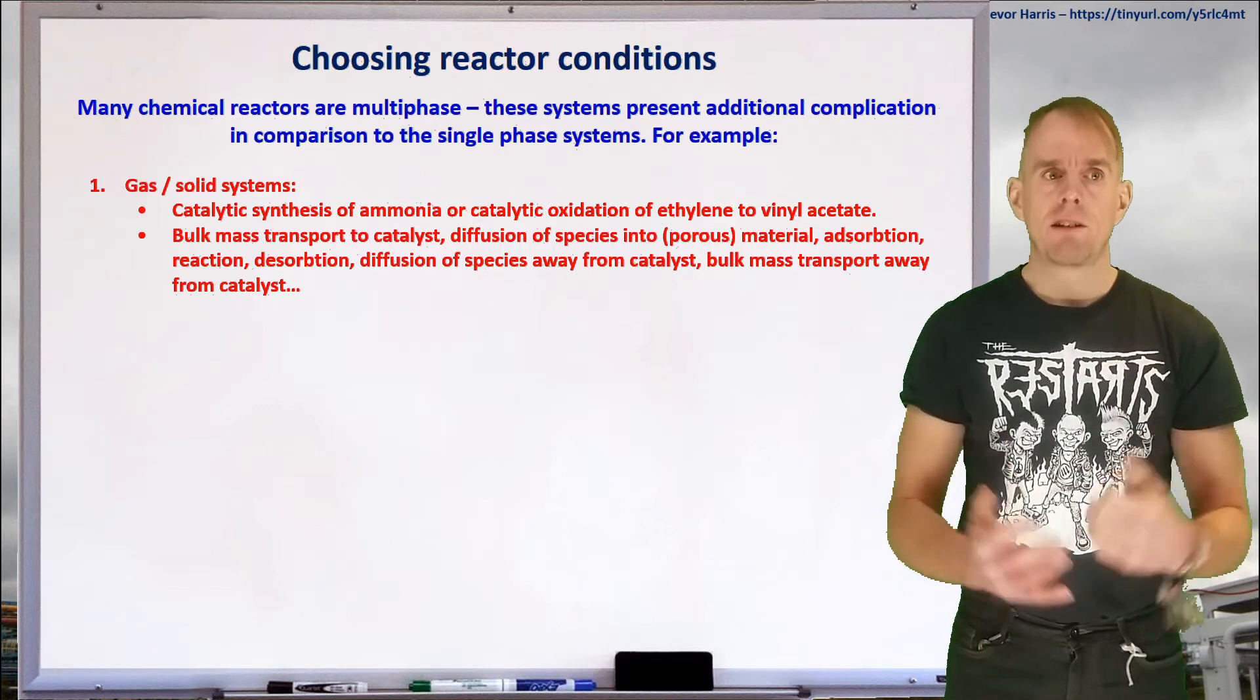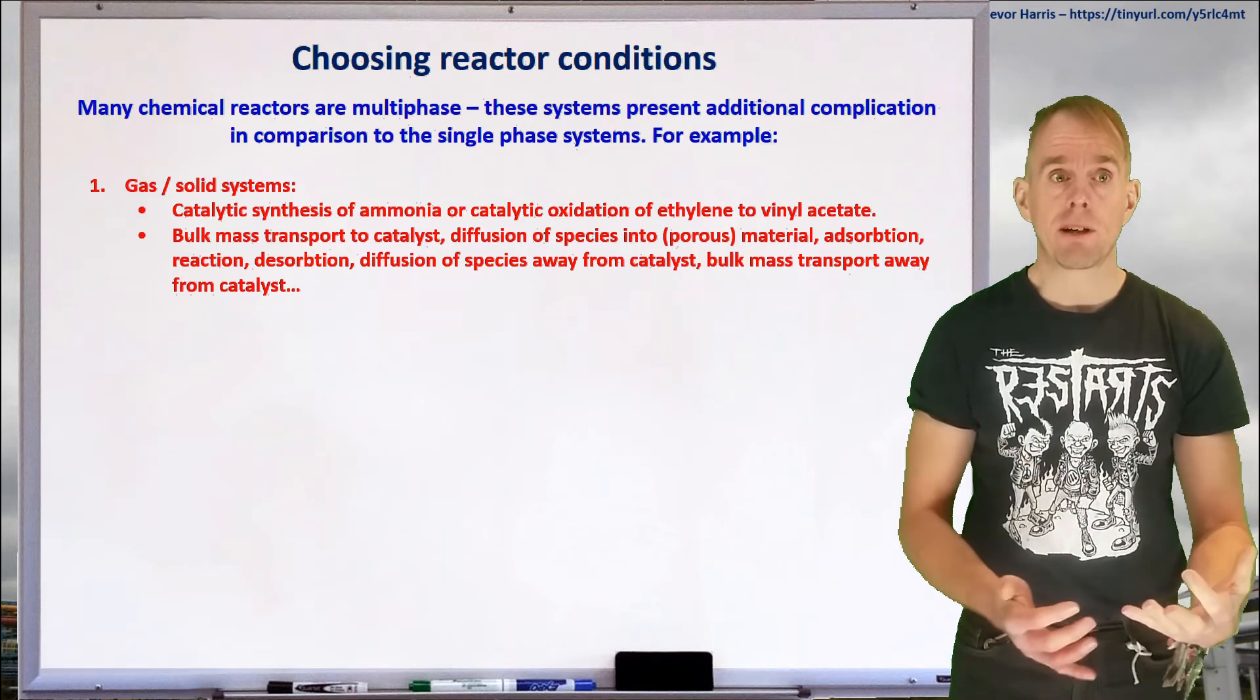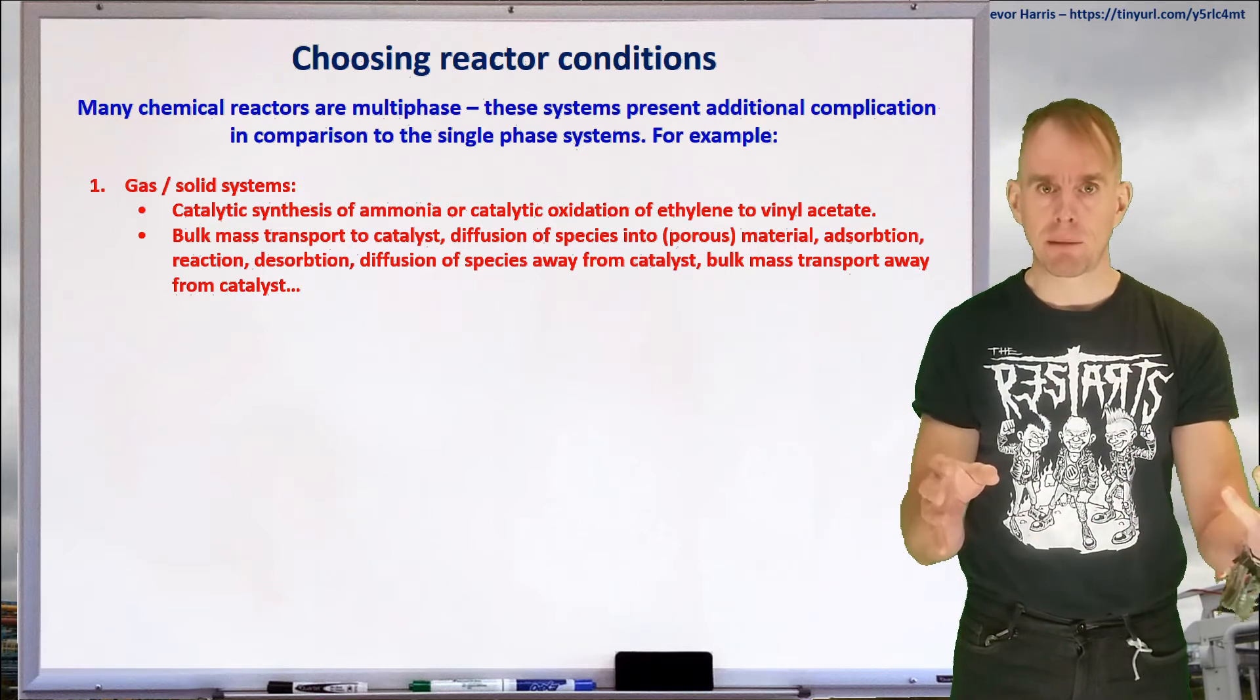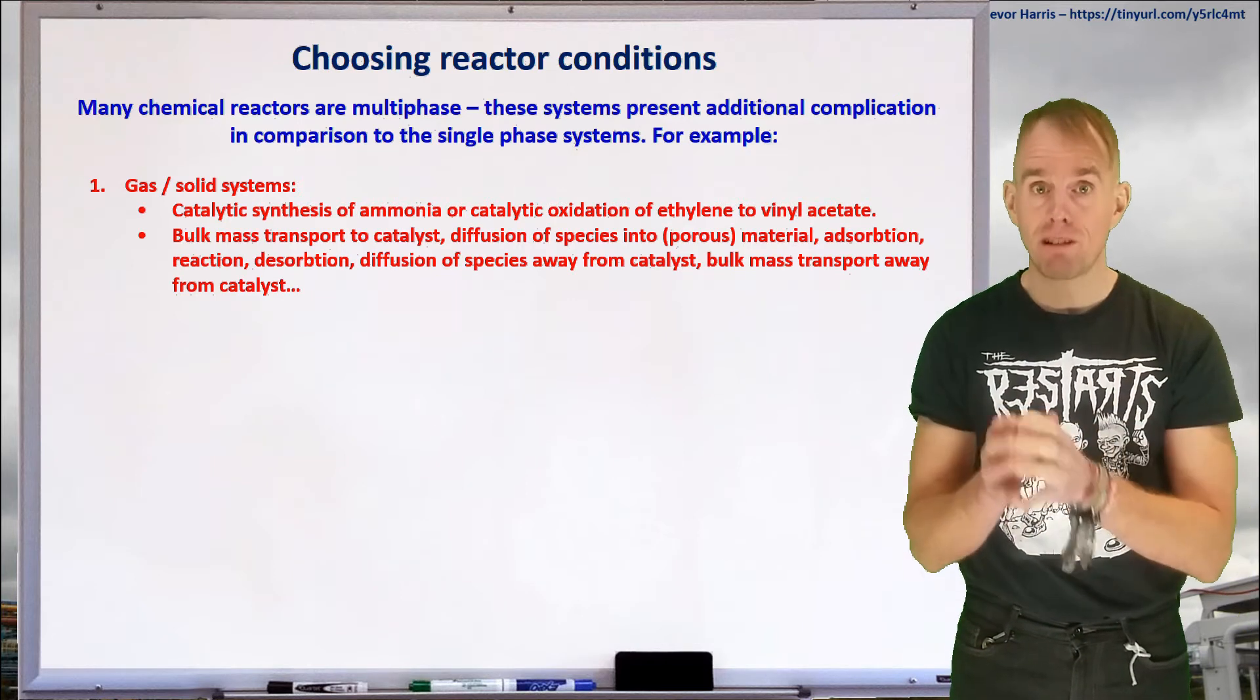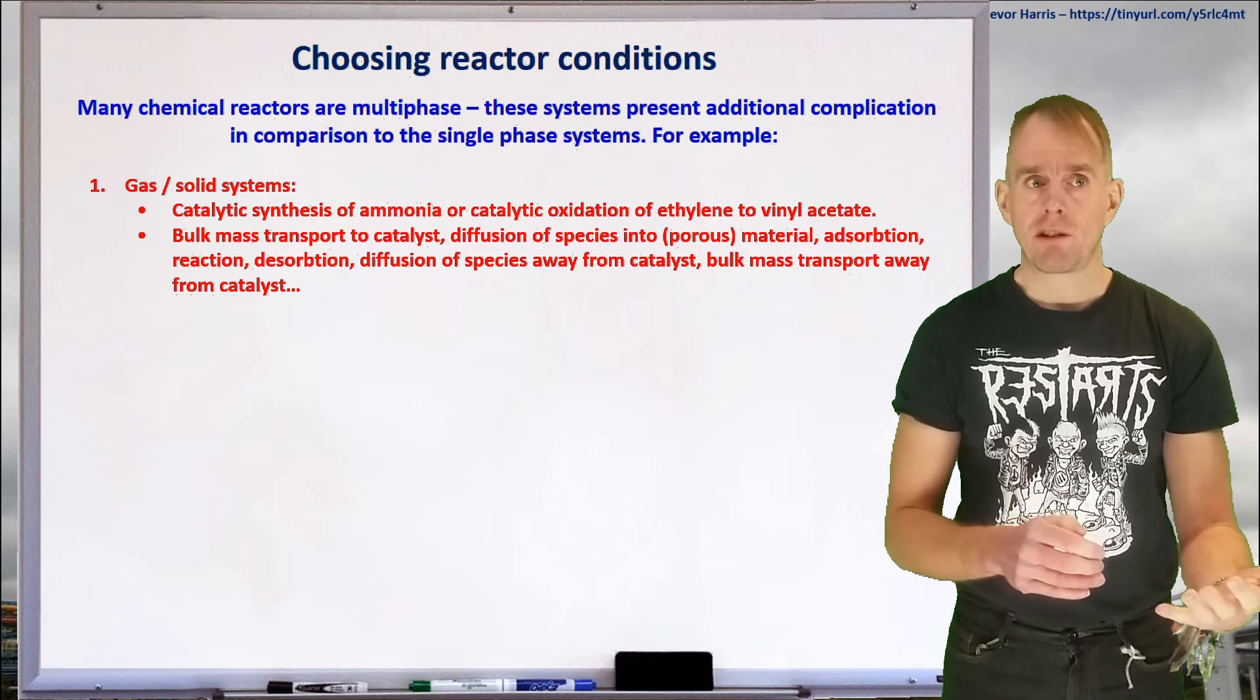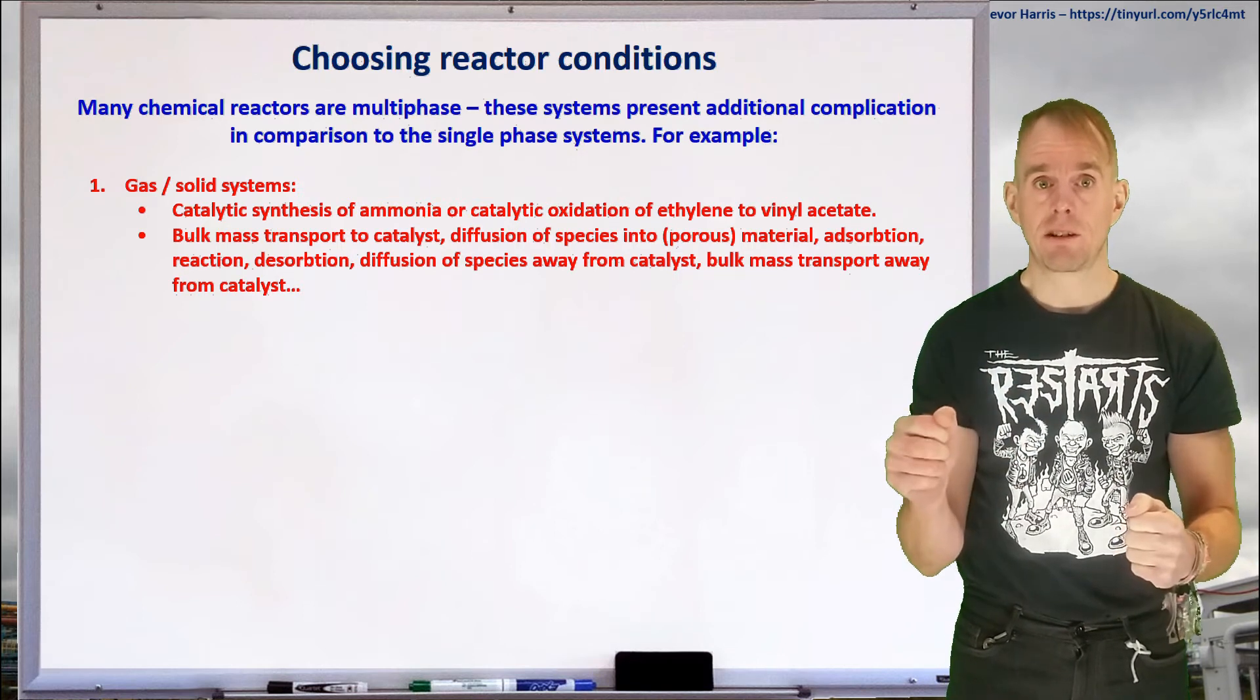So, you might have a gas-solid system. This could be, for example, a catalytic synthesis. If you look at the ammonia process, your catalyst is solid, all your reactions in the gas phase, and of course, you've got all your different mass transfer steps between bulk gas to catalytic site, and from catalytic site back to bulk gas. So, are your kinetics limiting this, or are your various mass transfer processes limiting this? You've got to always think about those processes. You've got also adsorption processes, you've got desorption, you've got diffusion of species, so you've got all these different mass transfer links between bulk gas and catalytic site. What's actually limiting?